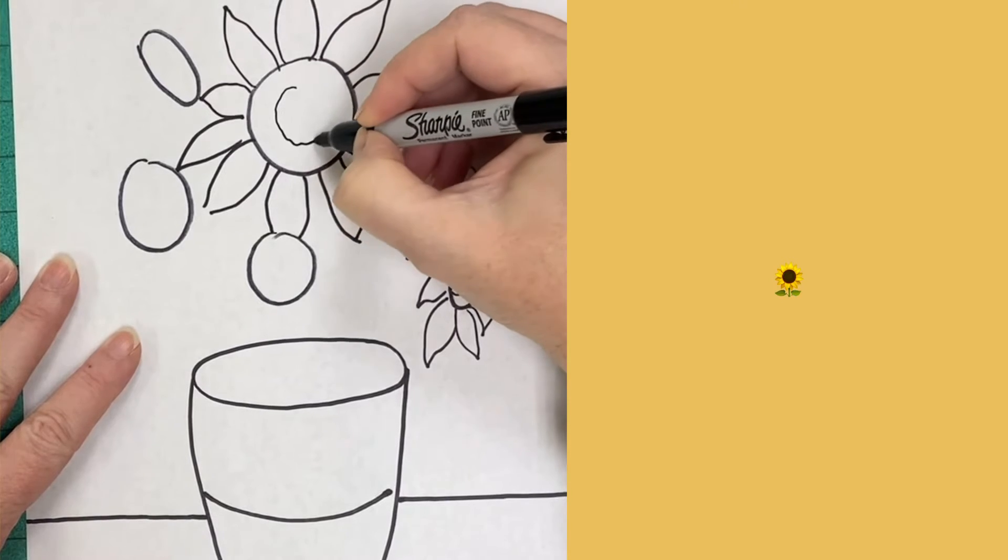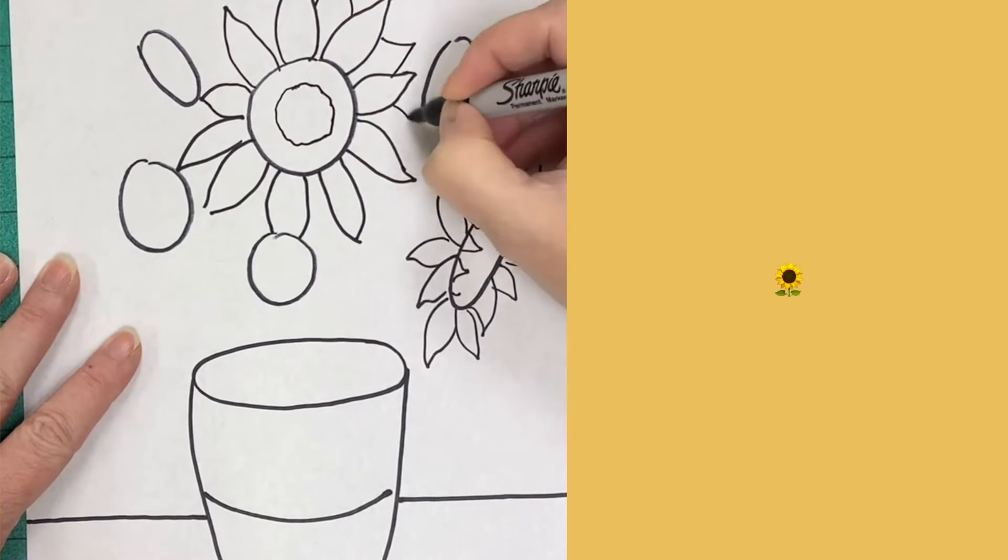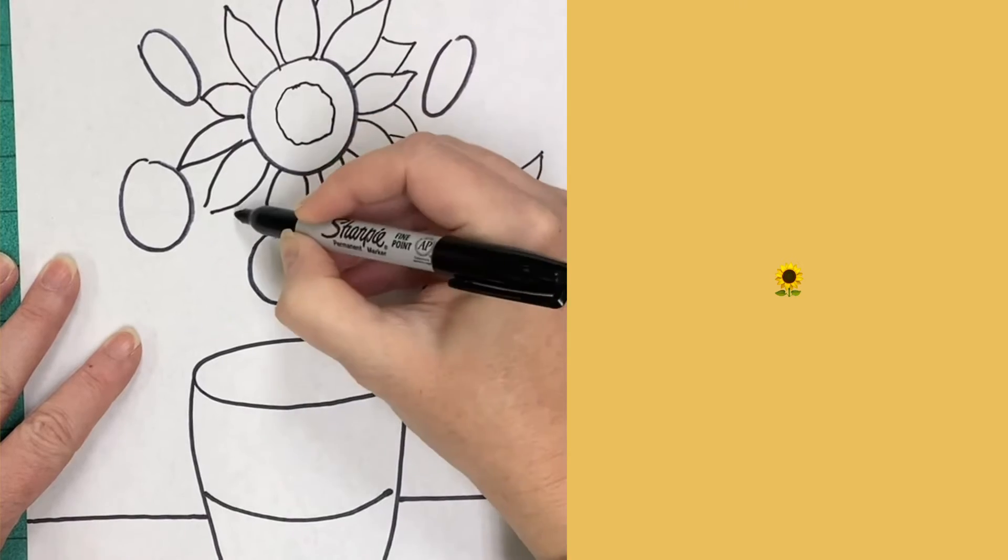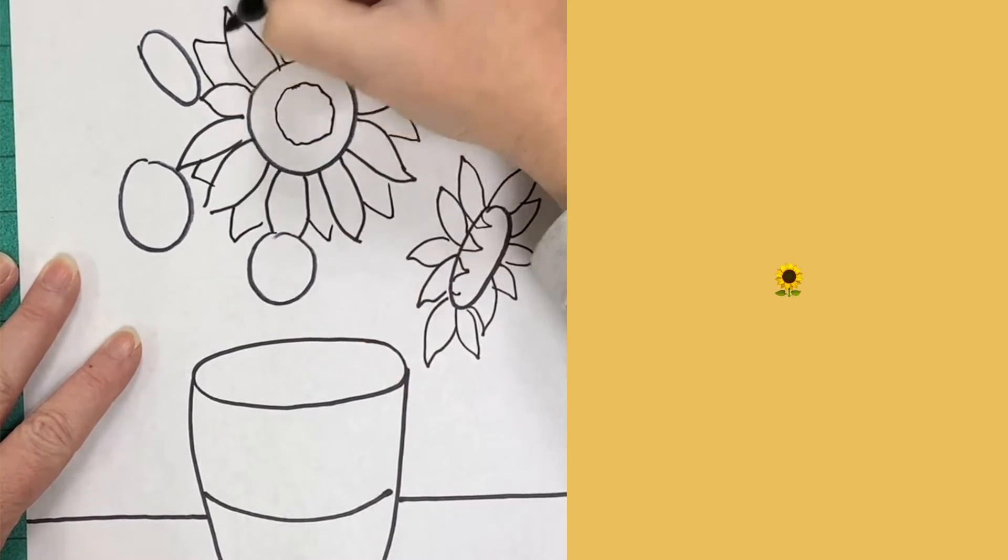Okay so now I'm just going to put in a little bit of texture in the middle and I'm going to add like a v-shape to fill in the rest of the sunflower gaps.